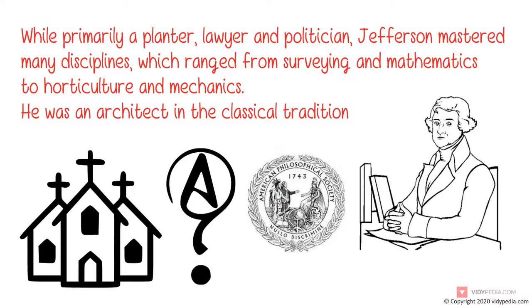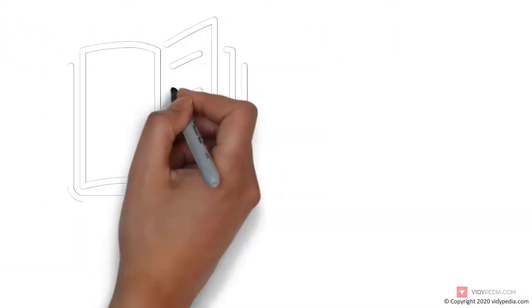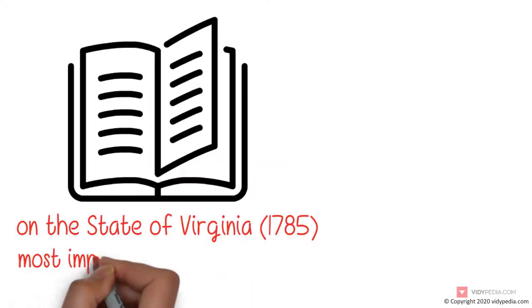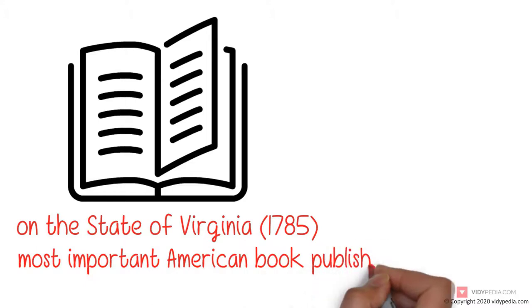A philologist, Jefferson knew several languages. He was a prolific letter writer and corresponded with many prominent people. Among his books is Notes on the State of Virginia, 1785, which was considered the most important American book published before 1800. Jefferson championed the ideals, values, and teachings of the Enlightenment.